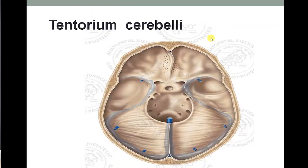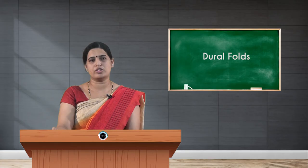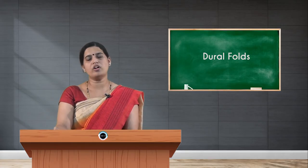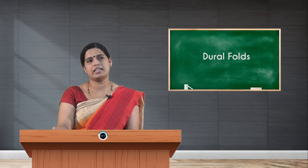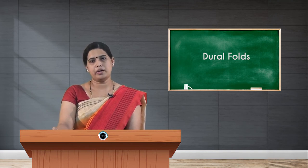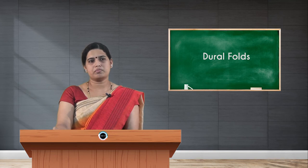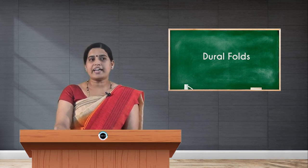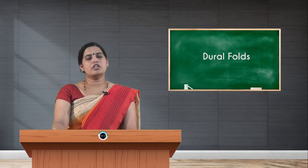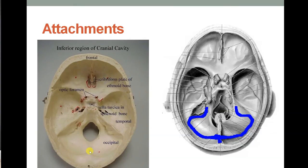Coming to the next dural fold — tentorium cerebelli. It forms the tent of the posterior cranial fossa and covers the cerebellar hemispheres. You can see here how the tentorium cerebelli spreads out. The attached borders of the tentorium cerebelli are attached posteriorly to the transverse sulcus and then to the superior border of the petrous part of the temporal bone.